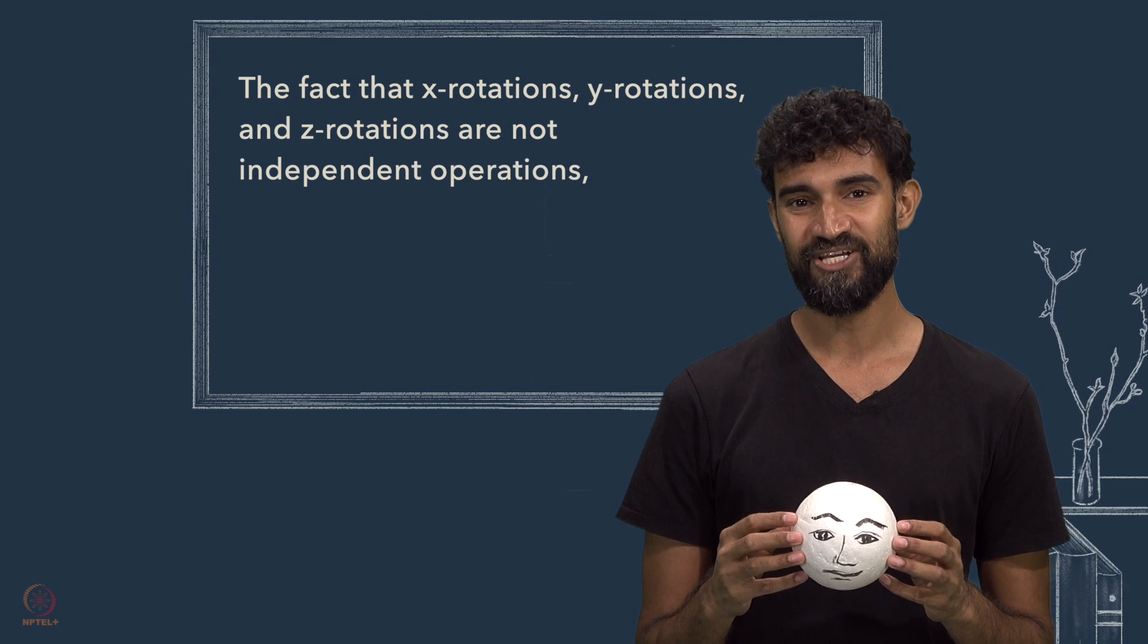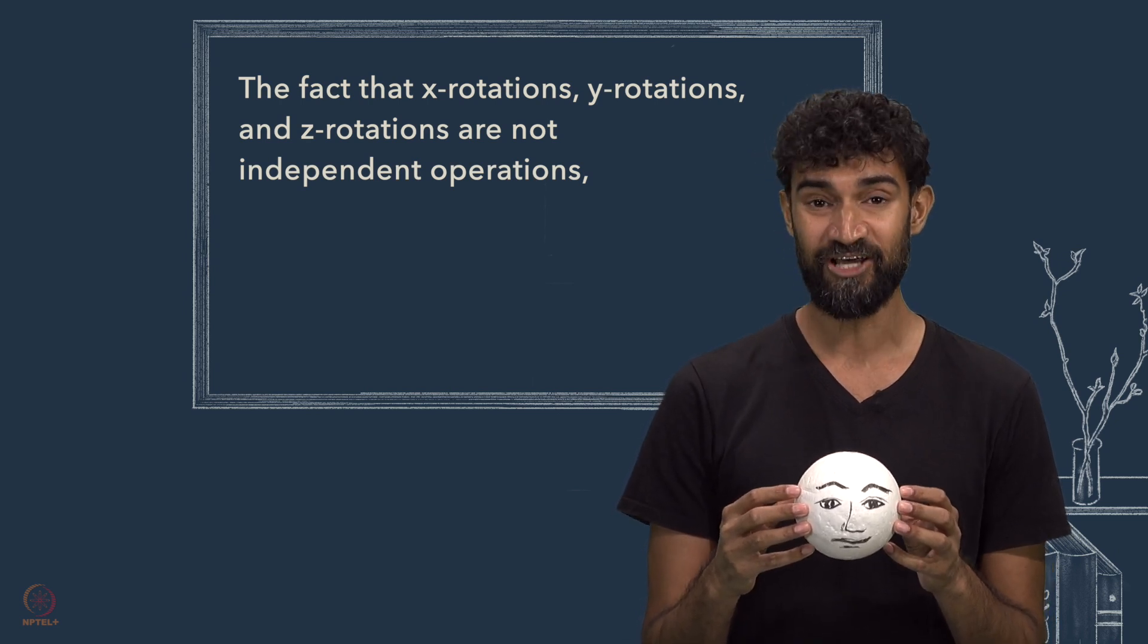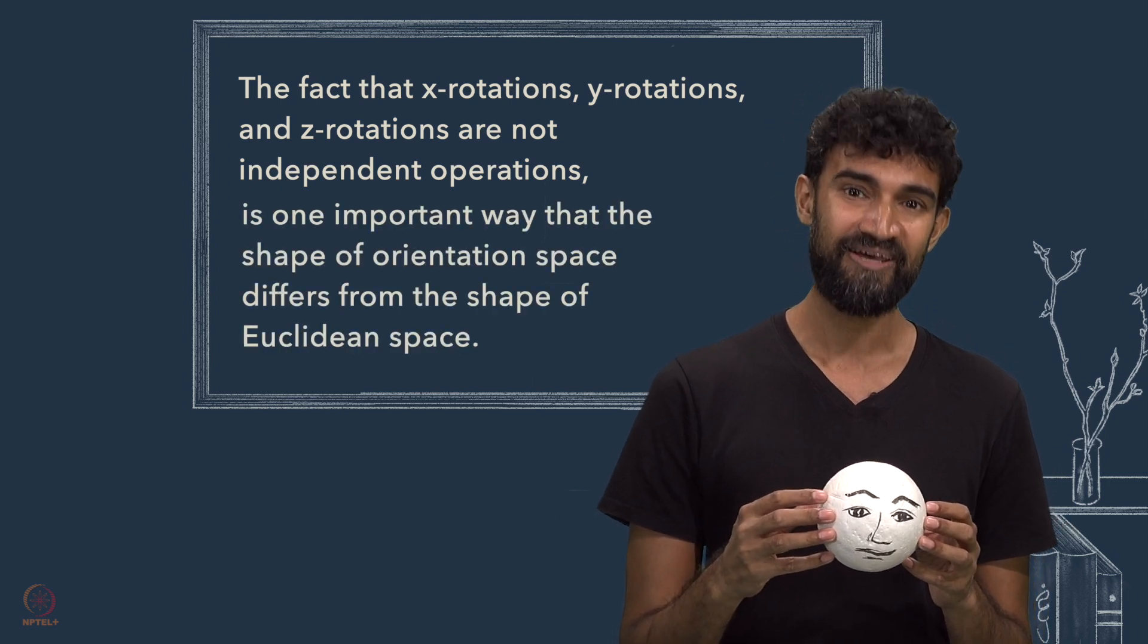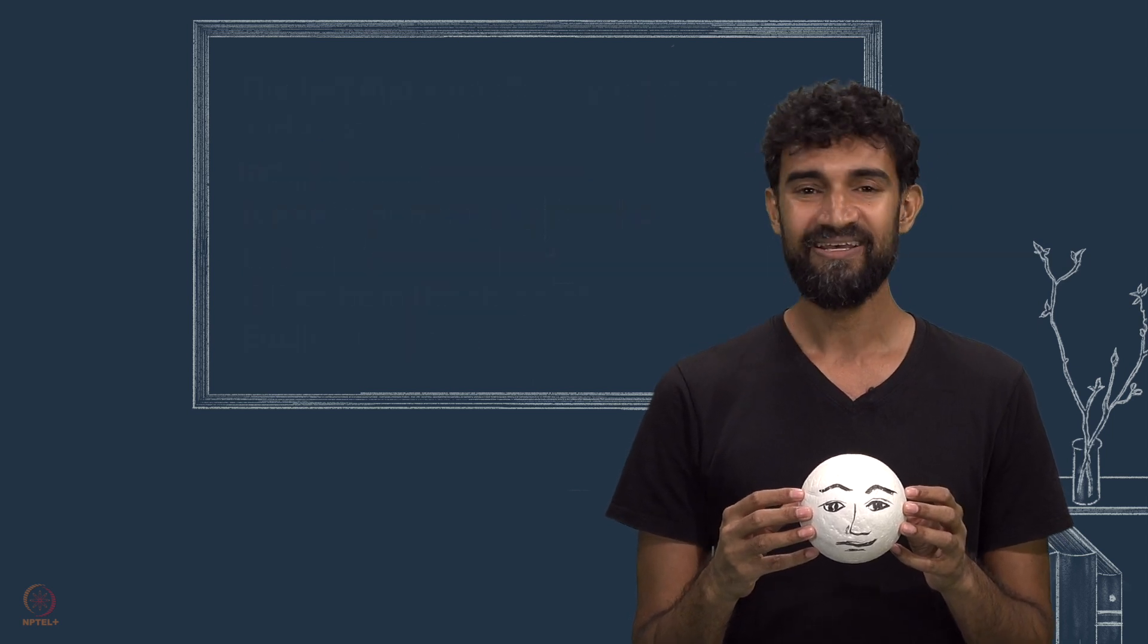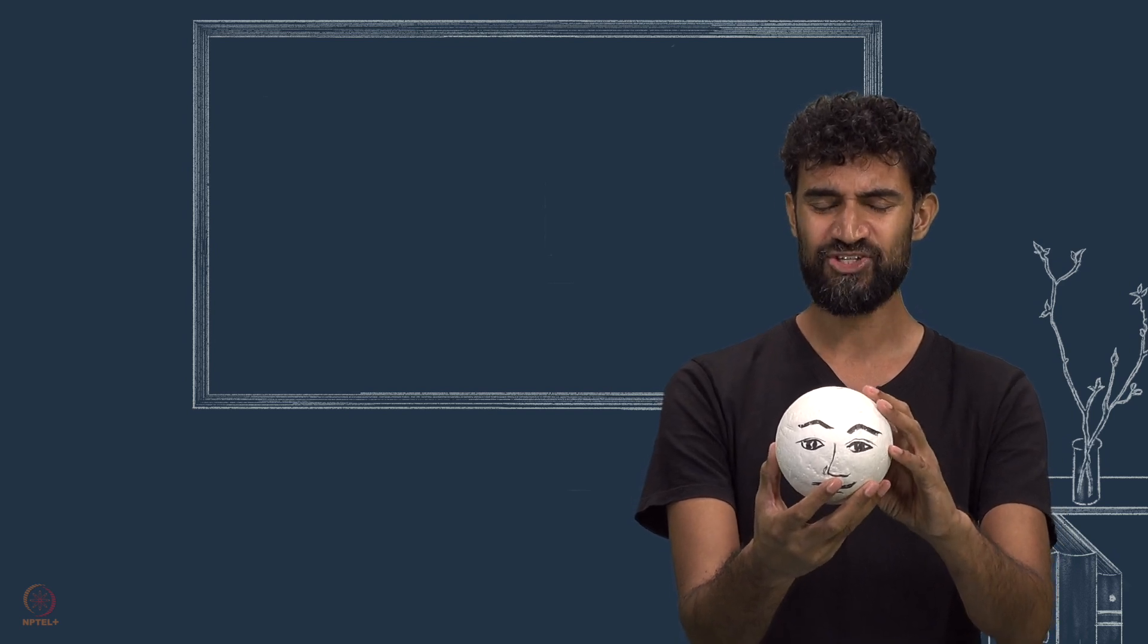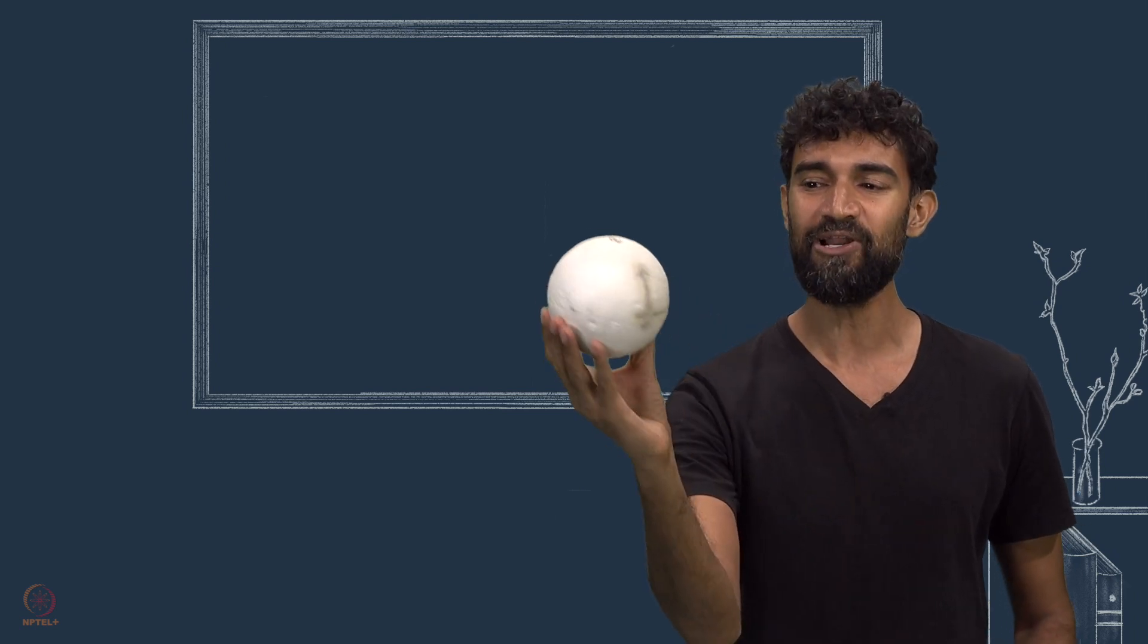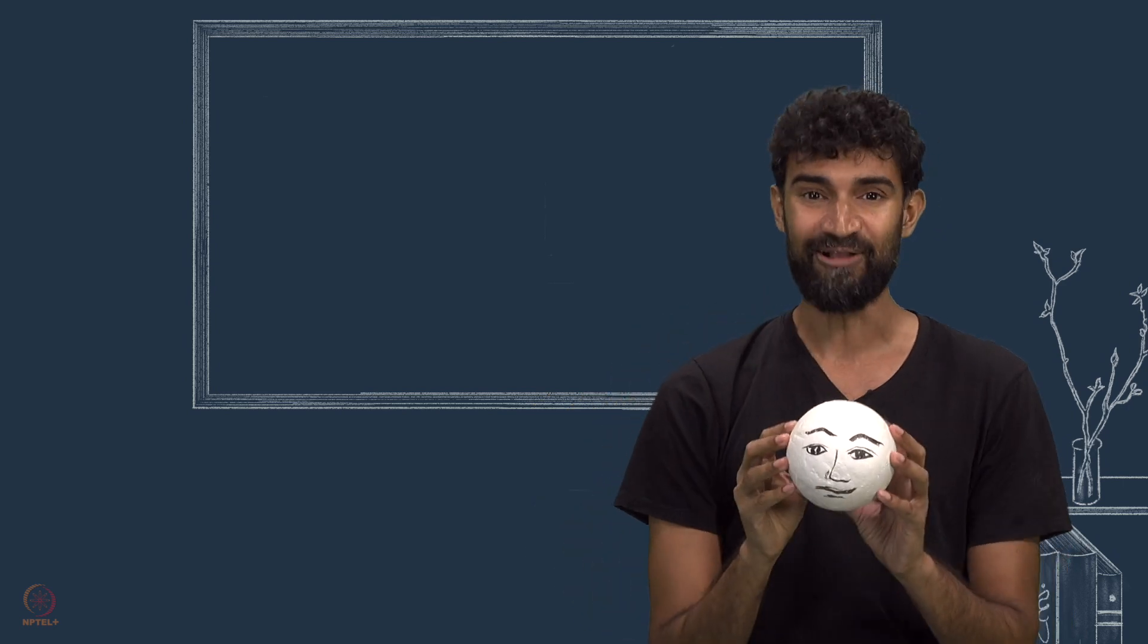The fact that x-rotations, y-rotations, and z-rotations are not independent operations is one important way that the shape of orientation space differs from the shape of Euclidean space. But, it's far from the whole story. As we unravel the larger story in the upcoming videos, we'll see why the strange topology of orientation space is precisely what allows us to perform movements like this, without getting tangled up.